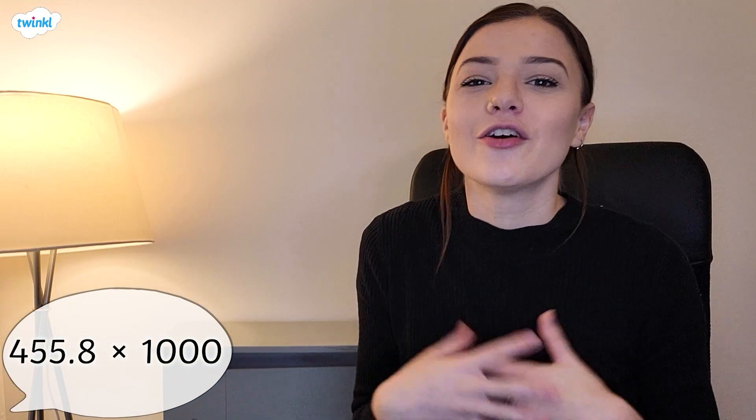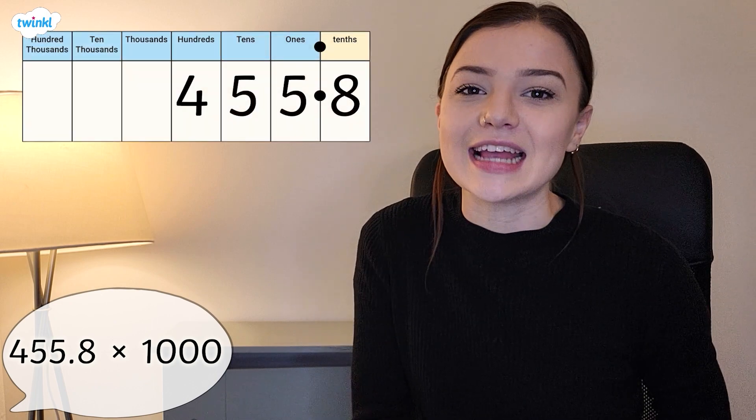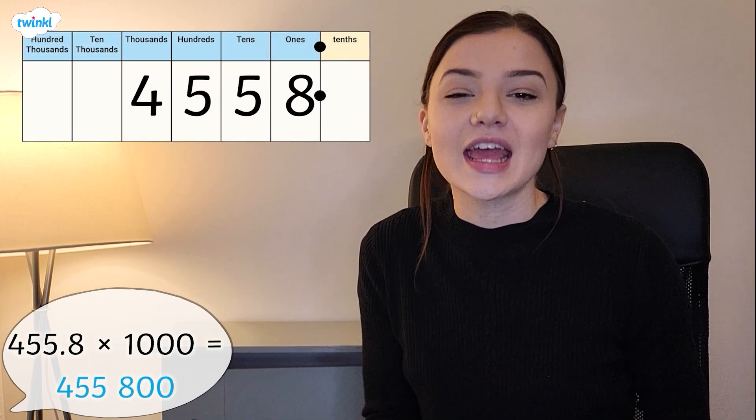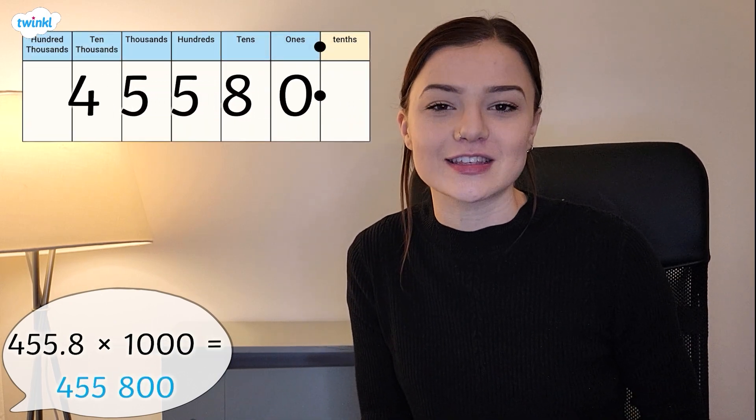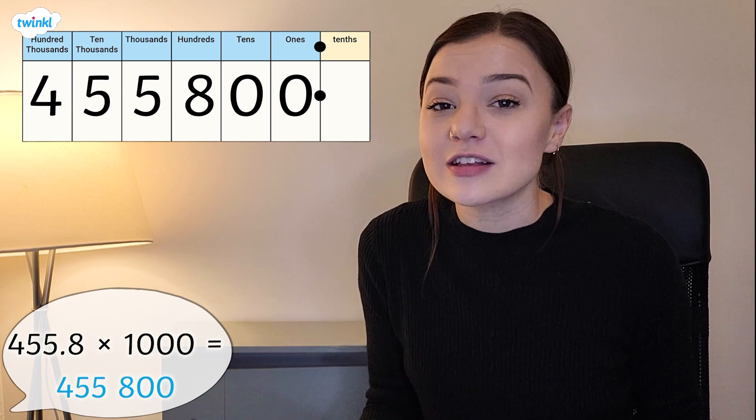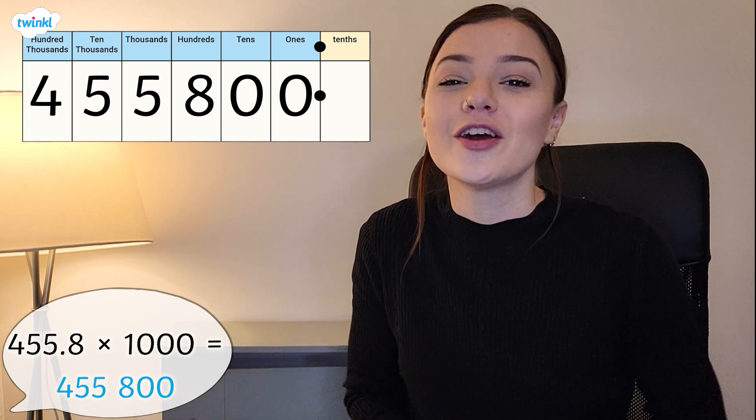Let's check through your answer. 455.8 multiplied by 1000 is 455,800, as all of our digits have moved three place value columns to the left. Very well done if you got that one right.